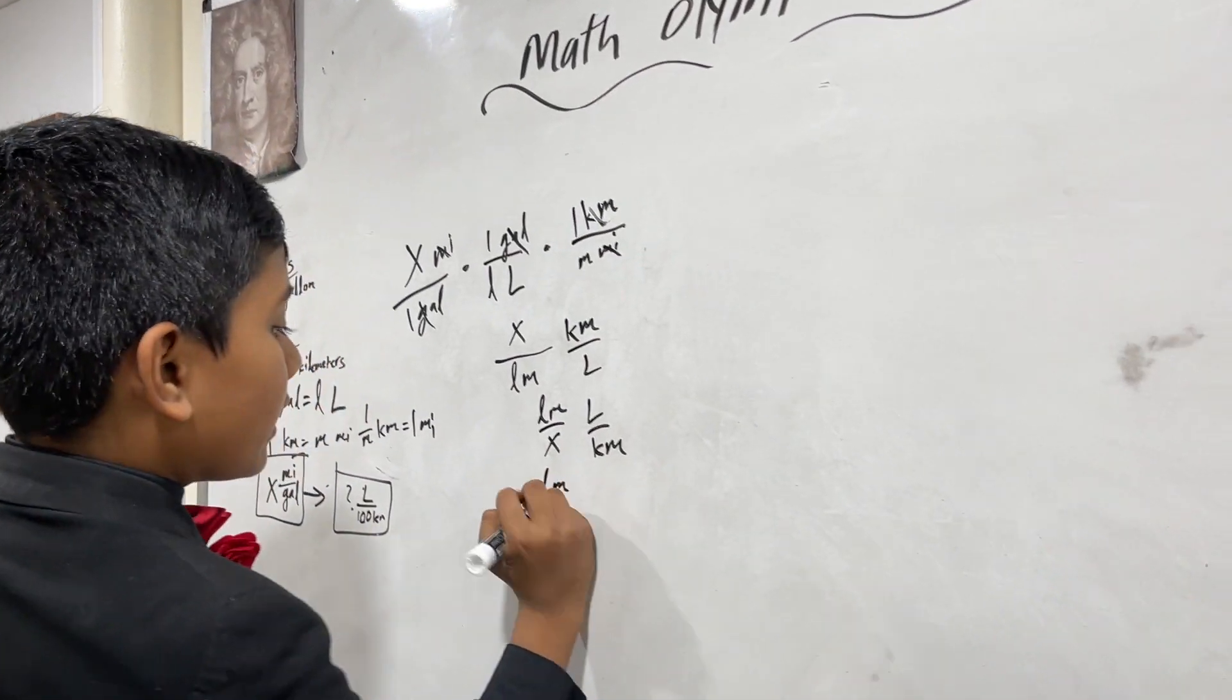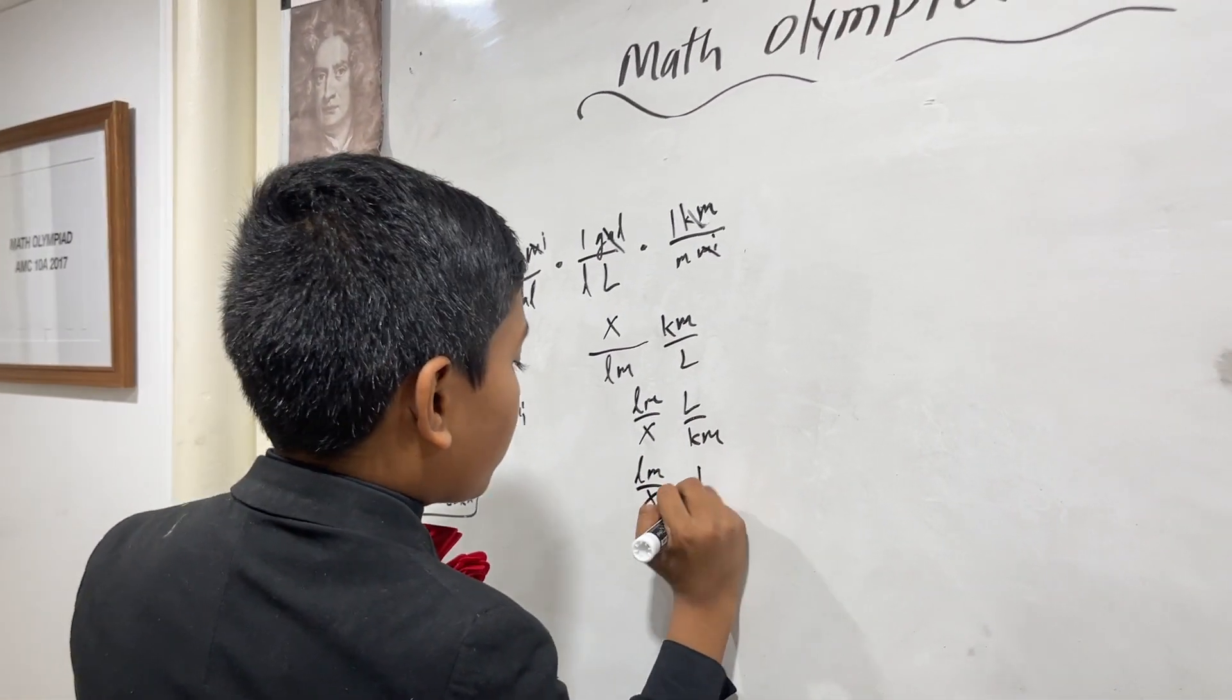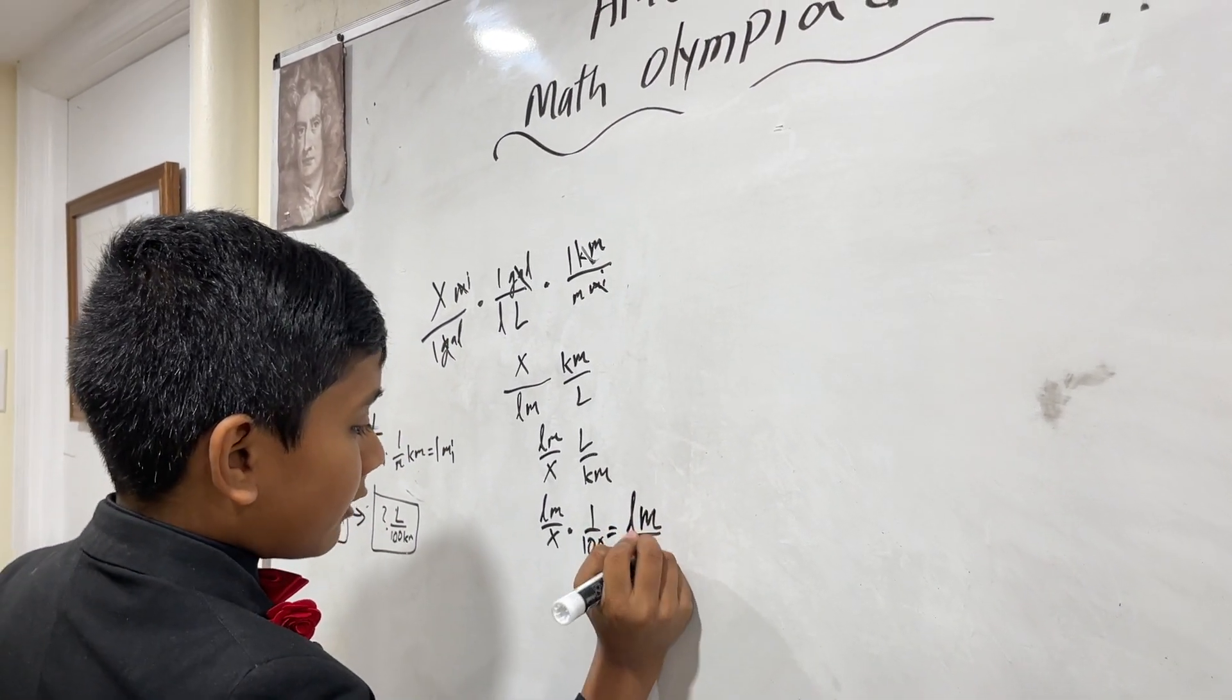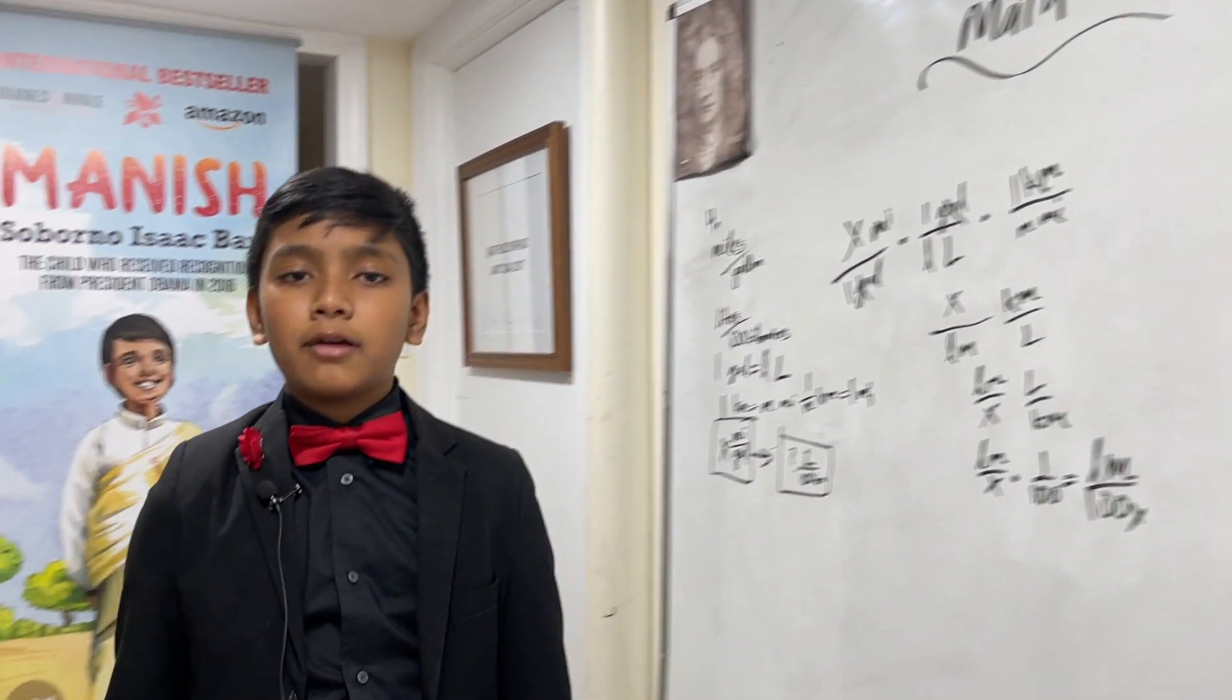So, you would multiply LM over X times one over 100. And that gives you LM over 100X. That's the answer. Thank you, everybody, for watching.